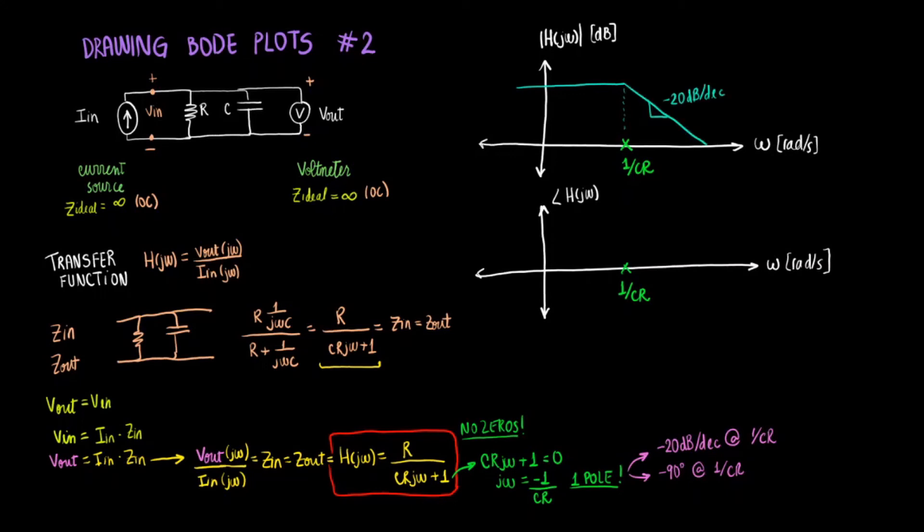Then in the phase angle frequency plot, we will start at zero. And then we will drop 90 degrees once we hit the cutoff frequency. So let's call this zero. Let's call this negative 90 degrees. And there is this drop right here.